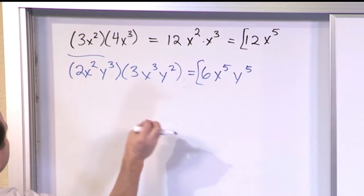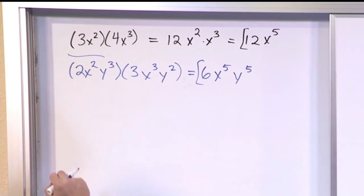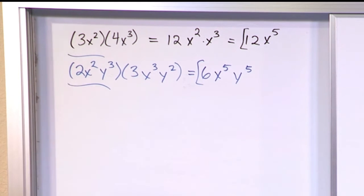So I have 6x to the fifth times y to the fifth. So anytime I'm multiplying terms together that have exponents, if they have the same base, I can just add the exponents together. And that is something we've learned before. We're just kind of introducing it again here more as a review, but also so that you will have the foundation to continue on with some of these other problems in a minute.